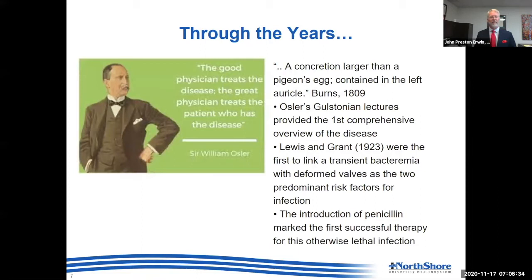Endocarditis is obviously not a new diagnosis — we've had it described in medical literature for many years. Osler's Goulstonian lectures provided the first comprehensive overview of this disease, and Lewis and Grant were the first to link transient bacteremia with deformed valves as a syndrome. The introduction of penicillin in the early 1900s marked the first point that endocarditis was not uniformly a lethal infection — though as we will see, it still carries very high lethality despite our improvements.